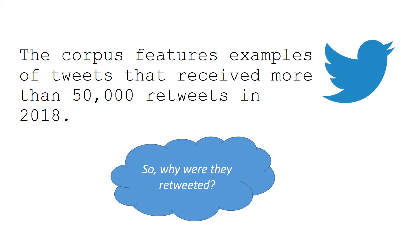We're going to start off by looking at something called a corpus. A corpus just means a collection of data, and that data could be anything — it could be text messages, tweets, extracts from novels, headlines from newspapers — just a collection of various types of the same thing. We're going to look at a corpus of tweets from Twitter, and these ones were selected because they received more than 50,000 retweets in 2018.